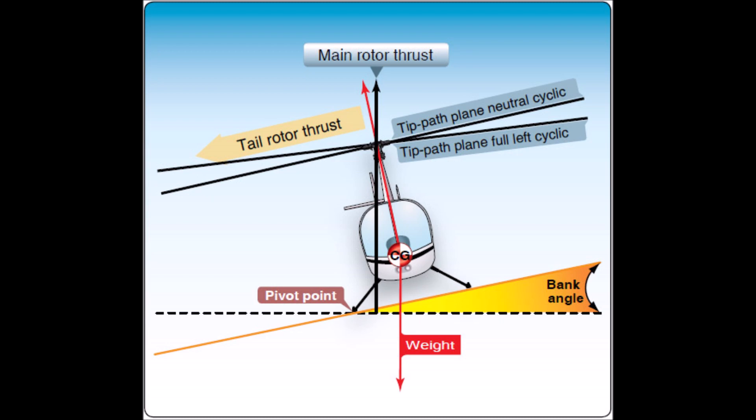After this angle is achieved, the cyclic does not have sufficient range of control to eliminate the thrust component and convert it to lift. If the critical rollover angle is exceeded, the helicopter rolls on its side regardless of the cyclic corrections made.